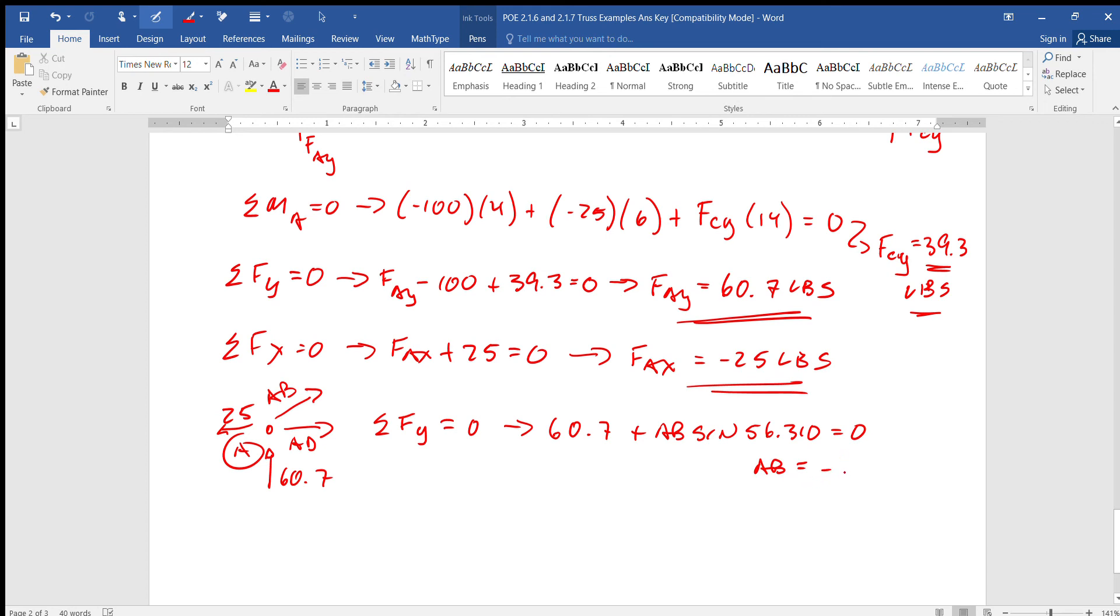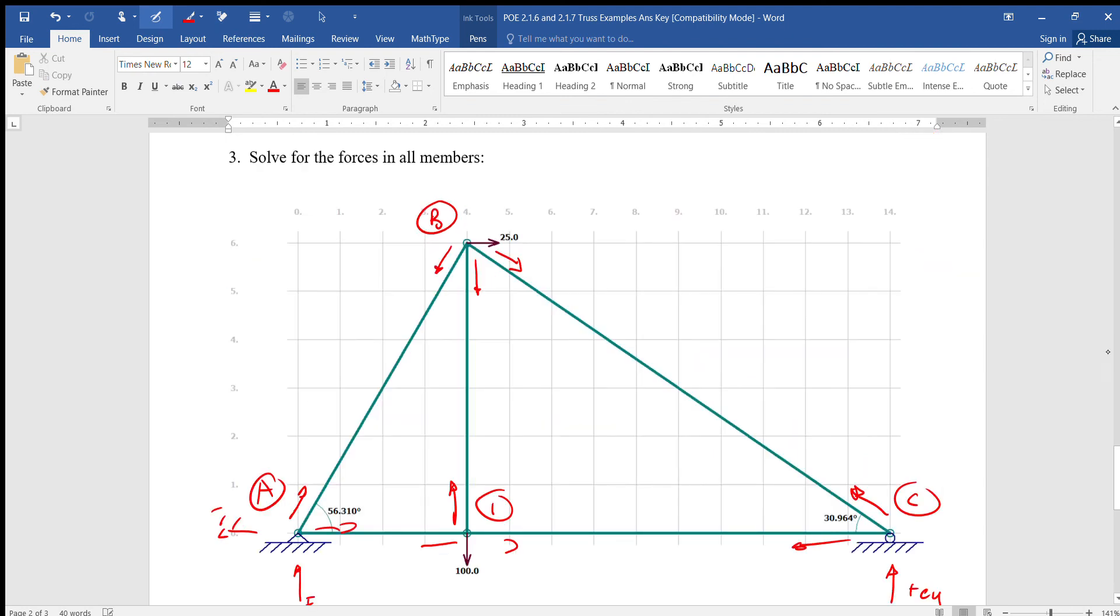Therefore AB equals negative 73.0. Oops, it's in compression. I know you're shocked, which means I gotta change all of these.